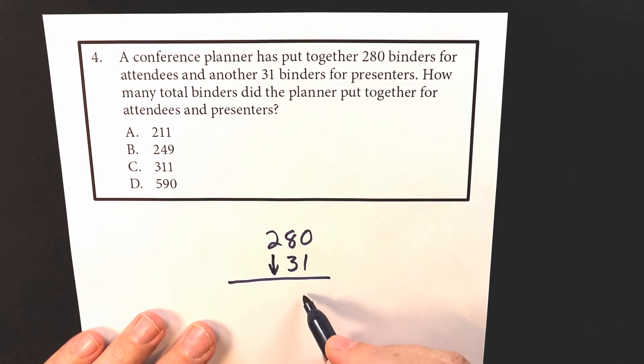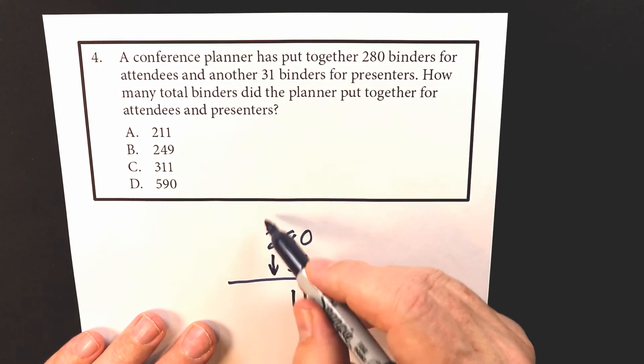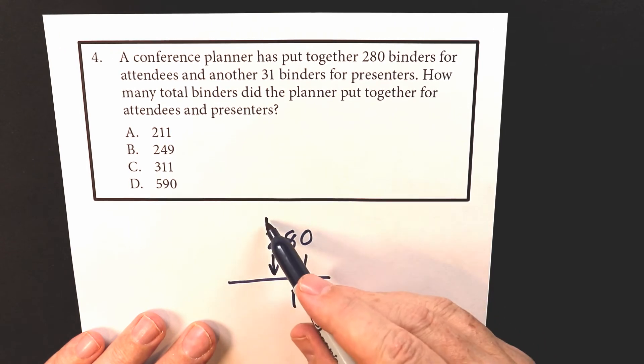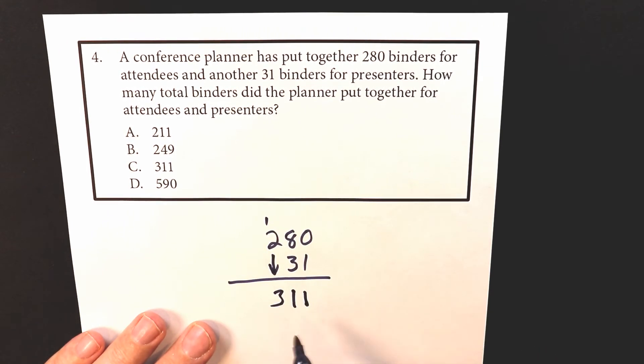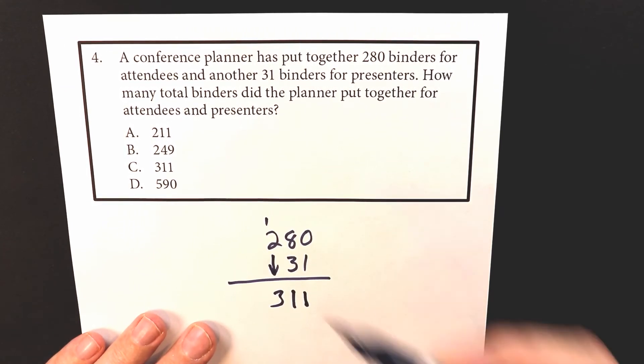Okay, so zero plus one is one. Eight plus three is 11. And we're going to carry the one. So one plus two is three. So 311 is the total, which is C. And that's your final answer.